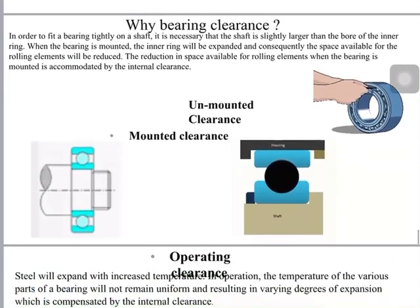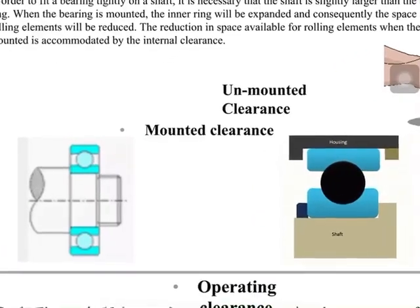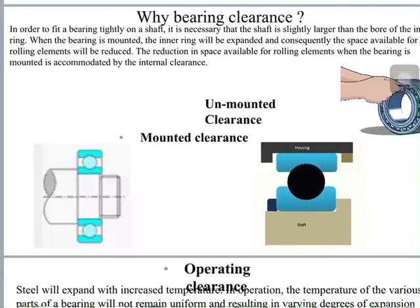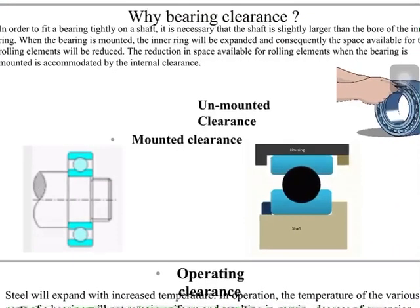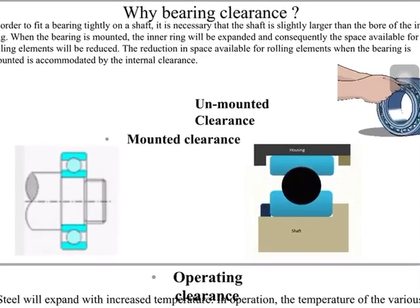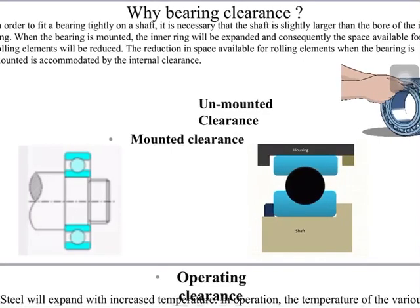When you purchase a bearing before assembly it has a certain clearance called unmounted clearance. When assembling a fan or pump, the bearing is fixed over the shaft, which always has a slightly larger diameter than the bearing bore. Pushing the bearing over the shaft causes expansion of the inner ring, reducing the clearance. Fixing the housing over the outer race further reduces clearance. This combined result is called the mounted clearance.